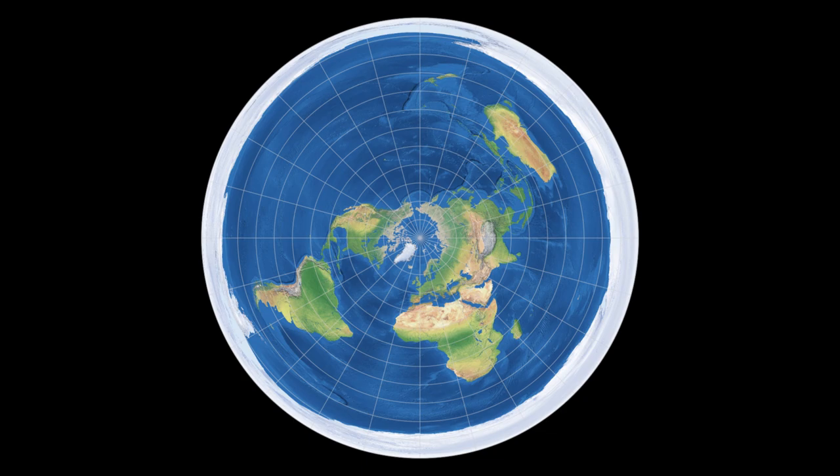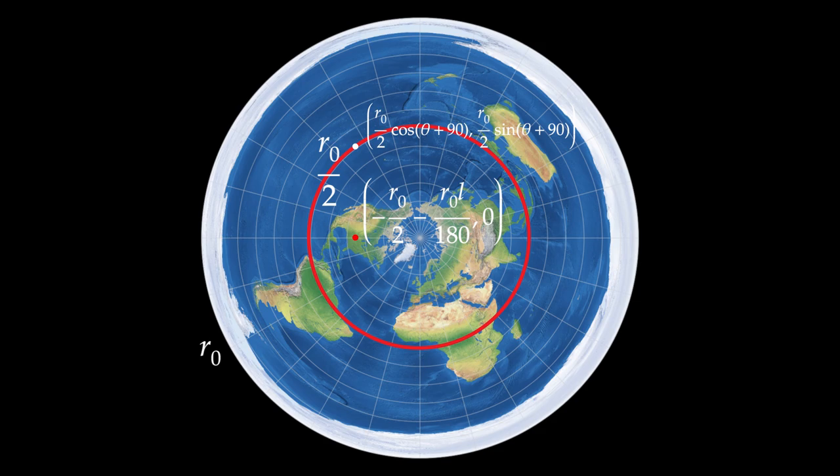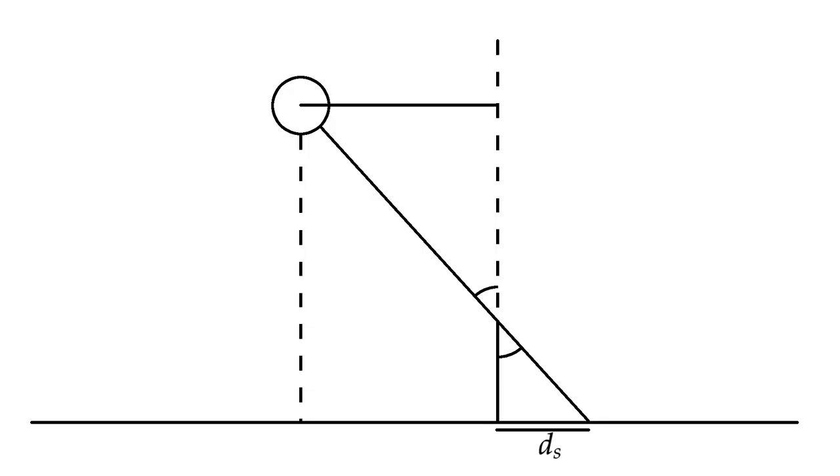We can represent the radius of the azimuthal equidistant projection at latitude 90 degrees south as R0, meaning the sun would circle the earth at a radius of R0 over 2. Because this projection is equidistant, latitude is made easier to calculate, so we can represent our position as a point P0 at negative R0 over 2 minus R0 L over 180, 0, where L represents latitude and the sun is at point P1 on circle R0 over 2, or R0 over 2 cosine theta plus 90, for theta is within the interval of 0 and 180. Because the flat earth model is, well, flat, we can say that where ds represents shadow distance and d represents the distance between P0 and P1, ds is proportional to d, which we can demonstrate geometrically.